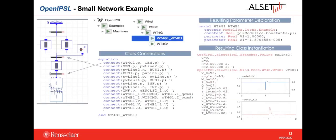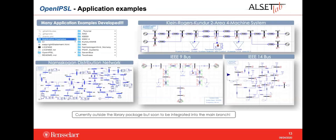After a model is built, we can combine and interconnect those models into network models. The connection between models is done using the power pin, or PW pin, connector — represented by the blue square you can see in the picture. This connector transmits phasor quantities — voltage and current — through the models. OpenAPSL also has many different example networks, currently located in a package called Application Examples, which will soon be integrated into the main library.